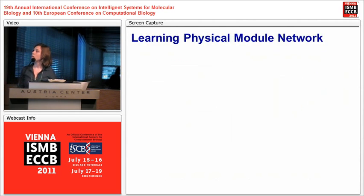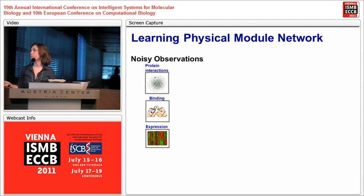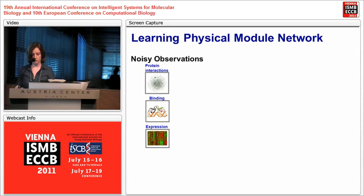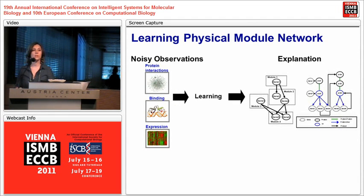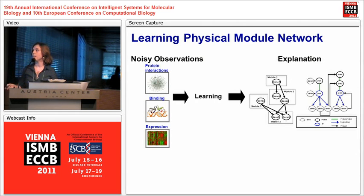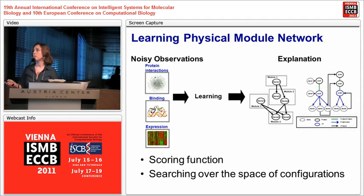We receive as input noisy observations from gene expression, protein-protein interactions, and protein-DNA interactions. We want a learning procedure that finds the best model configuration — the one that best explains the data. For this, we need to define a scoring metric and a learning procedure.